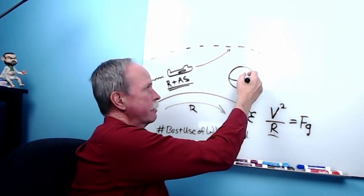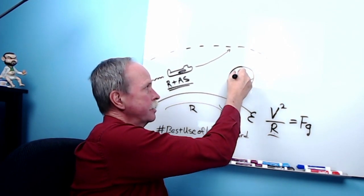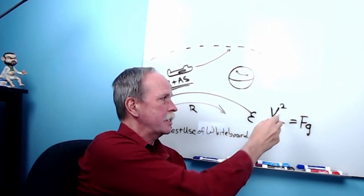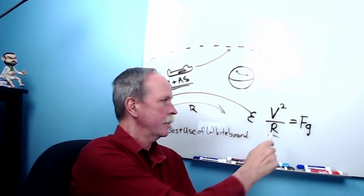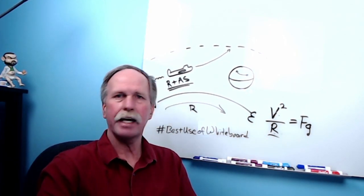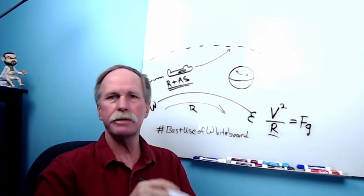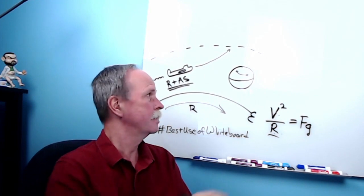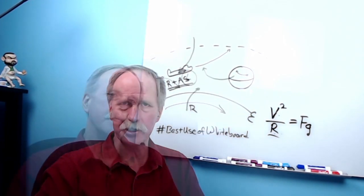Likewise, if the aircraft is going from east to west, it's slowing its velocity down. As a result, it tries to decrease its radius. It can't fly downward into the ground, so it goes to a place on the Earth that has a smaller radius — specifically, it starts heading towards the poles.